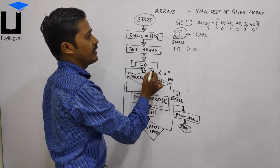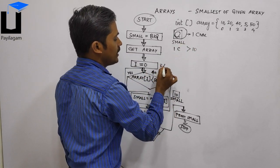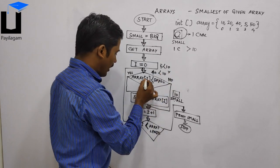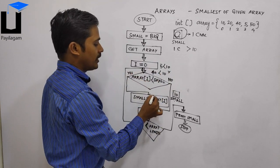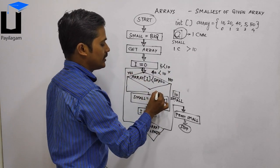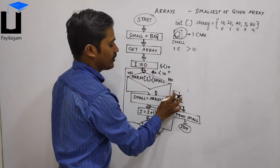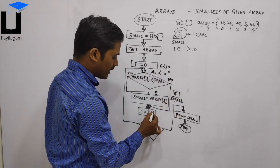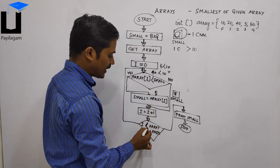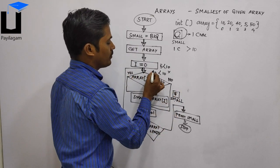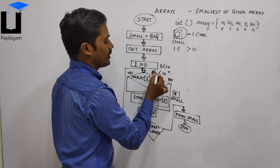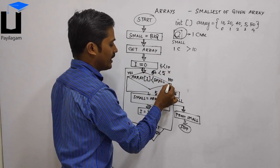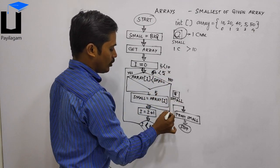Now array[3] is 5. Is 5 less than 10? Yes — so we go to the yes part. Small becomes 5. Now we increment i. Array[4] is 50. Is 50 less than 5? No — go to no part.